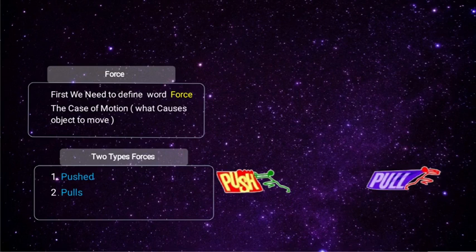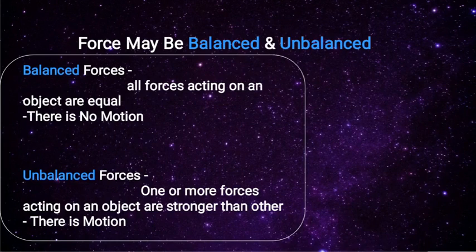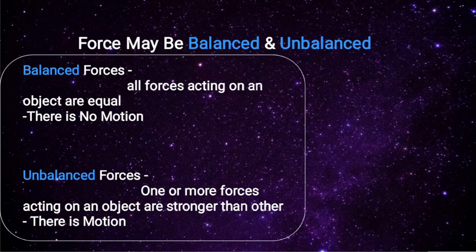Force: there are two types of force - first, push; second, pull. Force may be balanced or unbalanced. Balanced force means all forces acting on an object are equal and there is no motion. Unbalanced force means one or more forces acting on an object are stronger than the others, and there is motion.